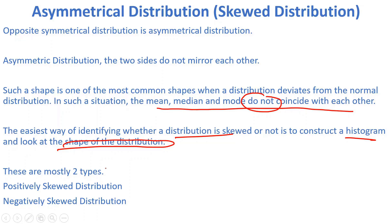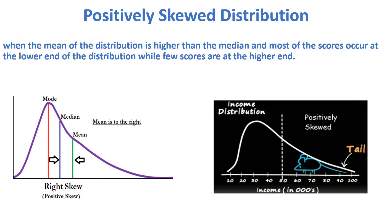Basically, we have two types of skewed distribution: positively skewed distribution and negatively skewed distribution. Let's understand them one by one. Now let's discuss the positively skewed distribution — what is the positively skewed distribution?